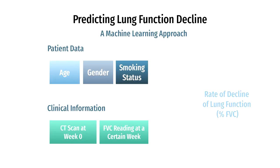We aim to use machine learning to predict the rate of lung function decline for each patient. Given a CT scan of the lung, initial reading of lung function, and some demographical data, our results, if successful, will enable clinicians to better predict the progression of cystic fibrosis given only the patient's demographics, an initial CT scan, and consequent checkups — hence reducing the cost for repeated scans while improving the accuracy and efficiency of predictions.